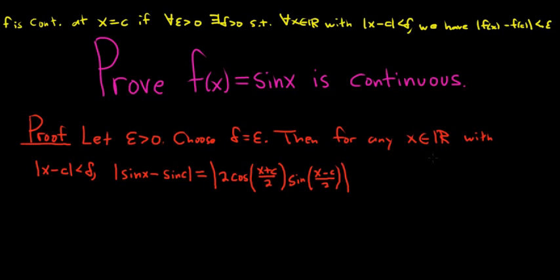So you have a couple things you can do here. You know that the absolute value of cosine and the absolute value of sine, they're both less than or equal to 1. But we also know that the absolute value of sin x is less than or equal to the absolute value of x. So that's also useful.